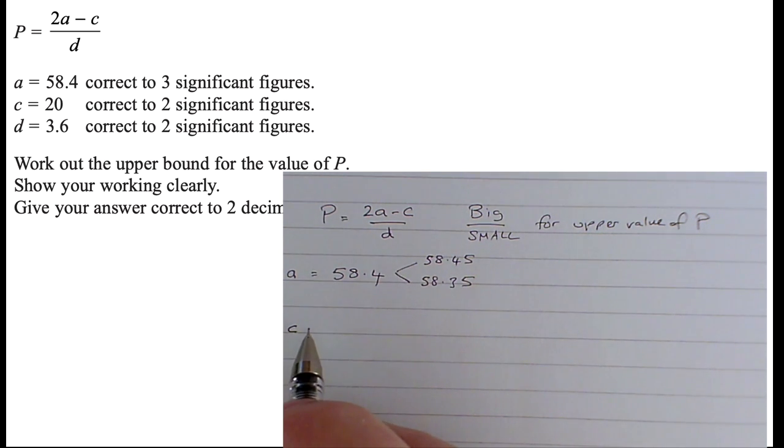C equals 20, so its upper bound is going to be 20.5, its lower bound 19.5. And D, well, that's 3.6, so its upper bound is going to be 3.65, and its lower bound 3.55.